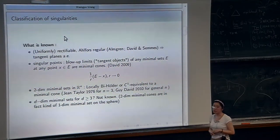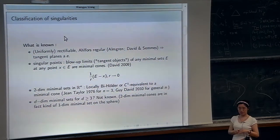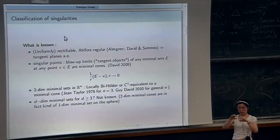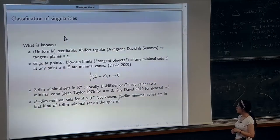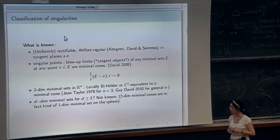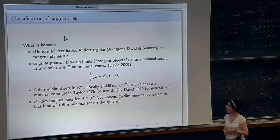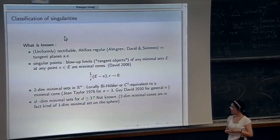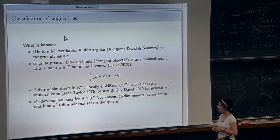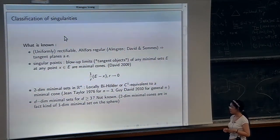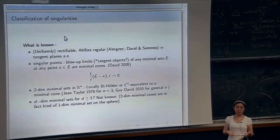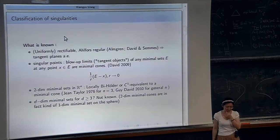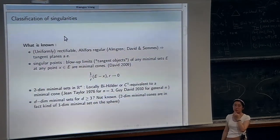We care mostly about singular points where the set is not a manifold. What we study is the blow-up: we zoom in on the set at each singular point. It is proven by David that any blow-up of a minimal set at any point X of E is a minimal cone — meaning it is a cone and it is a minimal set. However, we do not know whether at a given point there is only one blow-up limit or possibly more than one. This is not proven, but there is no counterexample either.